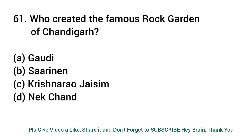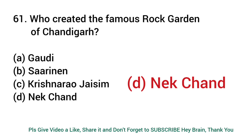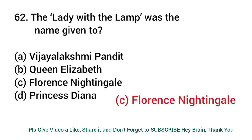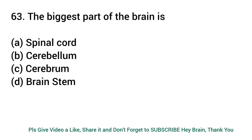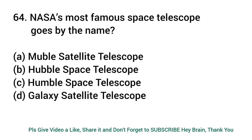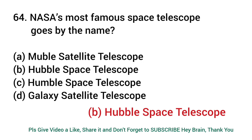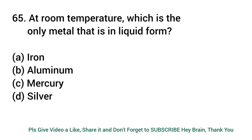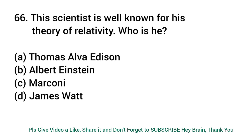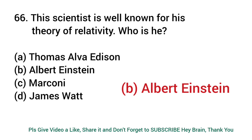Who created the famous Rock Garden of Chandigarh? Answer: Nek Chand. The Lady with the Lamp was the name given to? Answer: Florence Nightingale. The biggest part of the brain is? Answer: Cerebrum. NASA's most famous space telescope goes by the name? Answer: Hubble Space Telescope. At room temperature, which is the only metal that is in liquid form? Answer: Silver. This scientist is well known for his theory of relativity — who is he? Answer: Albert Einstein.